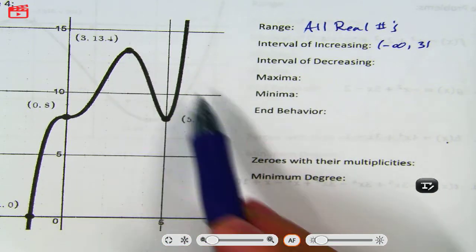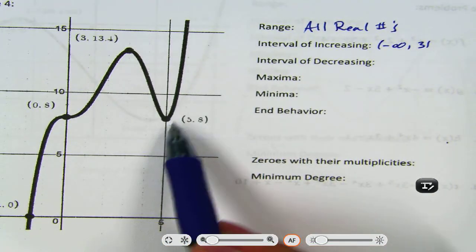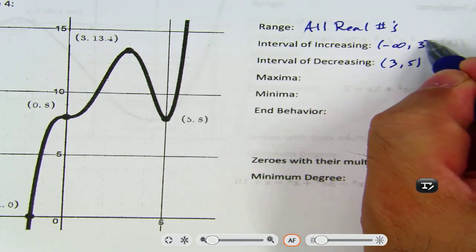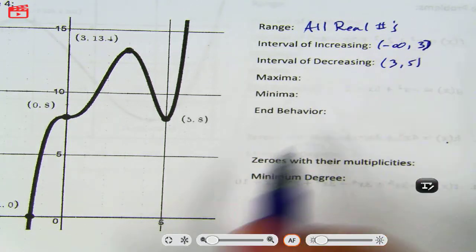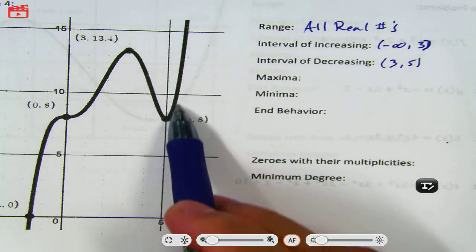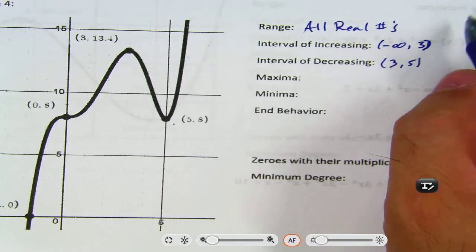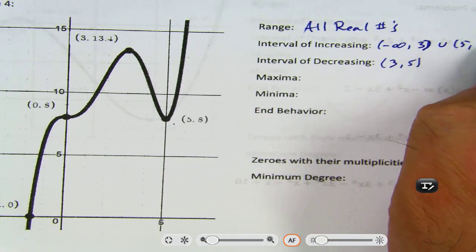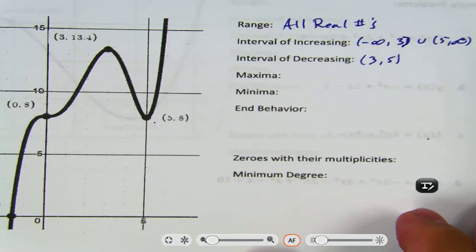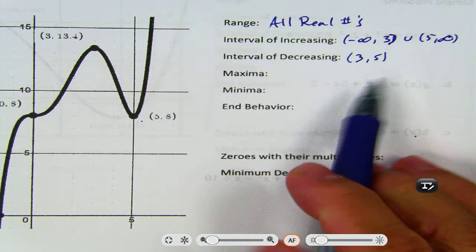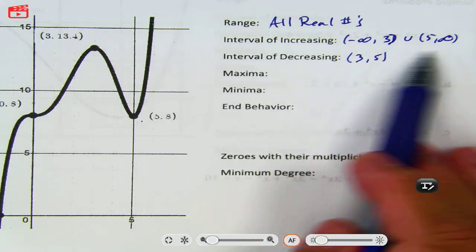I'm going down from 3 to 5. So let's go ahead and put that for a decrease in 3 to 5. And then it's going up from 5 to infinity. So union 5 to infinity. That's the interval notation for that.